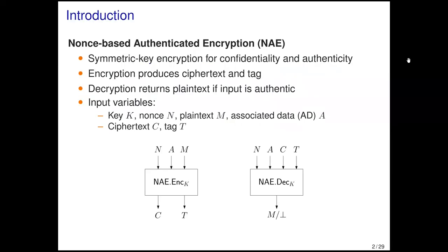Let me start with a brief introduction of nonce-based AE. This is a symmetric key encryption for confidentiality and authenticity. Its encryption outputs a ciphertext and a tag, which is used to authenticate the input, and the decryption returns a plaintext if the input to the decryption is authentic. Formally, an input to encryption consists of key k, nonce n, associated data A, and plaintext M. The output is ciphertext C and tag T. The tuple N, A, C, T is sent to the receiver. An input to the decryption consists of key k and this tuple, and it returns a plaintext M if the tuple is authentic; otherwise, it returns an error symbol.